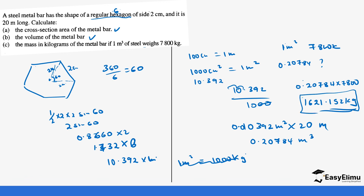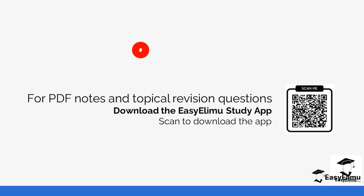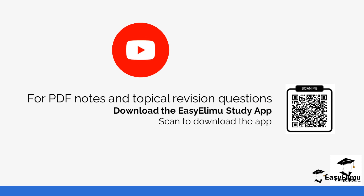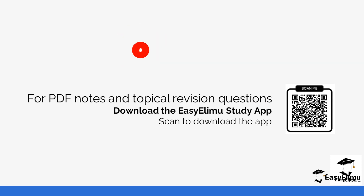Basically, we have used the volume of a prism — in this case using a polygon cross-section — to tackle a real-world word problem. Check out more worked questions on the platform; the notes are also available in the app. See you in the next lesson.